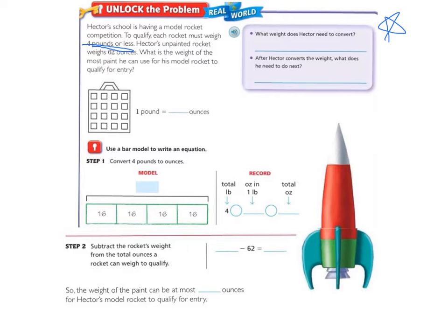So we need to change those 4 pounds into ounces. The second bullet point asks, after Hector converts the weight, what does he need to do next? And he will need to subtract. We will get to that in step 2.